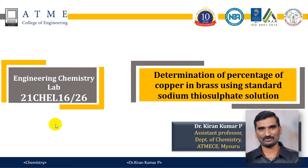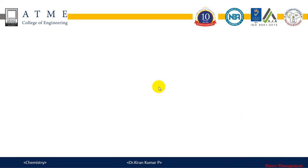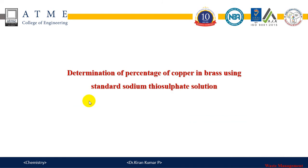Today's experiment is the determination of percentage of copper in brass sample using standard sodium thiosulfate solution. The experiment is also called as Iodometric titration, which is carried out by titrating the liberated iodine.